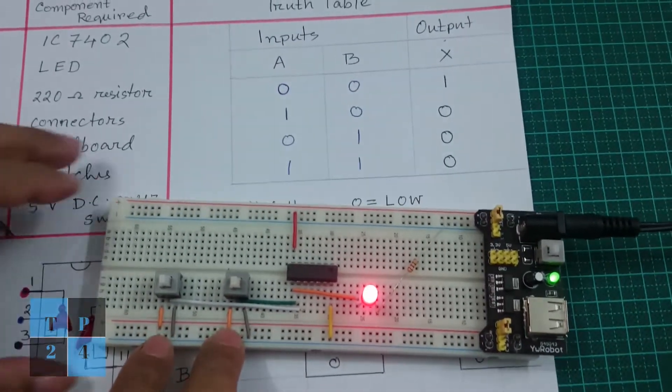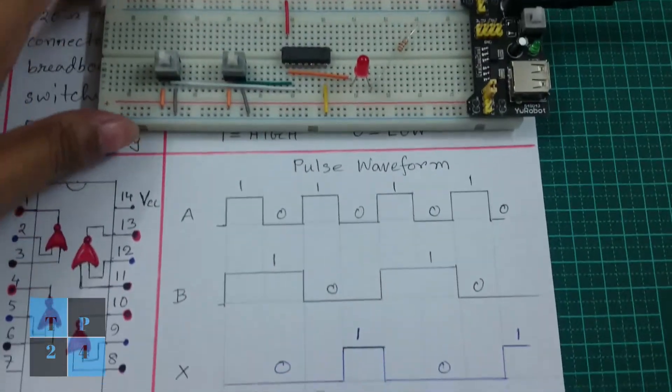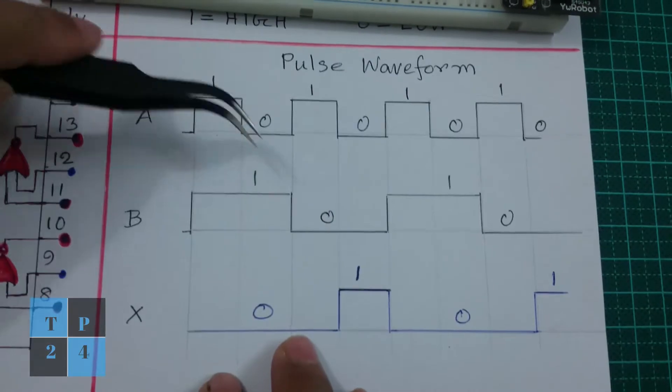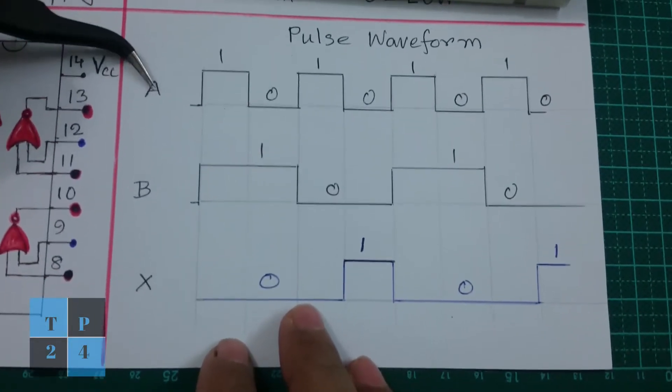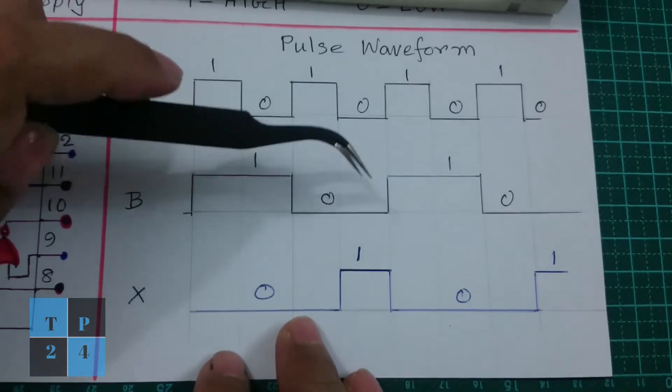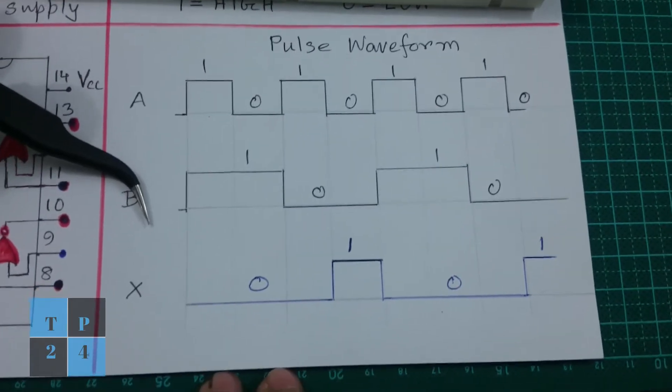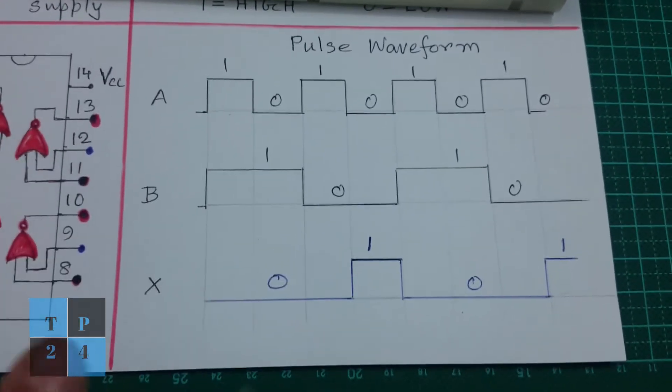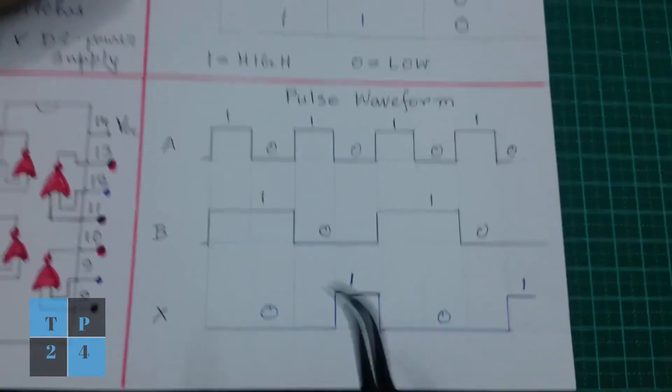Now I can show the pulse waveform. If I supply the waveform 1010 into input A and 1100 into input B, then I can get the output form following this truth table.